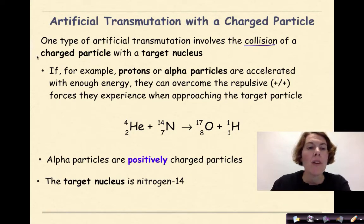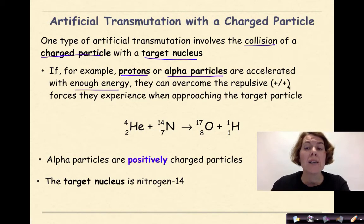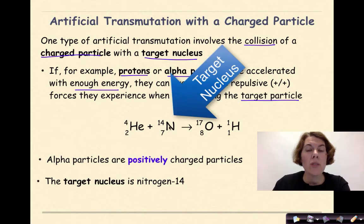So let's talk first about artificial transmutation with a charged particle. One type of artificial transmutation involves the collision of a charged particle with a target nucleus. If, for example, protons or alpha particles are accelerated with enough energy, they can overcome the repulsive positive-positive forces they experience when approaching the target particle.